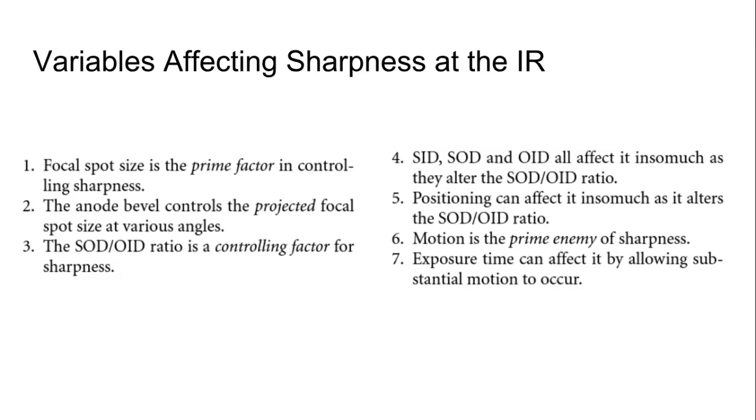All right, same thing for five. Essentially, positioning can affect. So for instance, if your positioning is not good where you create a situation where you have more OID than you wanted, then you're naturally going to have some magnification and thus your sharpness will go down again. We've talked about motion leading to a reduction of contrast, but also that blurry image that appears with motion essentially is obviously not going to be a very sharp image. So sharpness goes down.